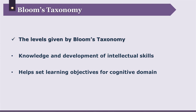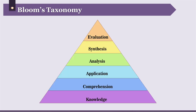Bloom's Taxonomy of learning objectives of the cognitive domain involves knowledge and development of intellectual skills. It helps us to set learning objectives for the cognitive domain. In the picture, you can see the different levels proposed by Bloom's Taxonomy. Bottom up, they are knowledge, comprehension, application, analysis, synthesis, and evaluation. These levels identify the level of performance that learners need to exhibit — what educators think the learner should know or the knowledge they must possess. The levels are ordered from simple to complex and from concrete to abstract, and this taxonomy gives a lot of importance to the performance of the learner.